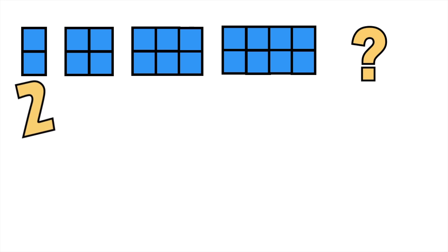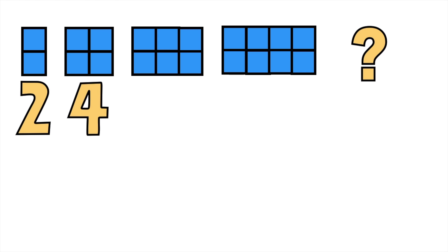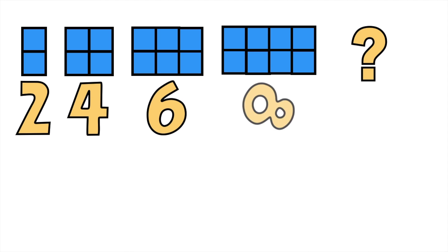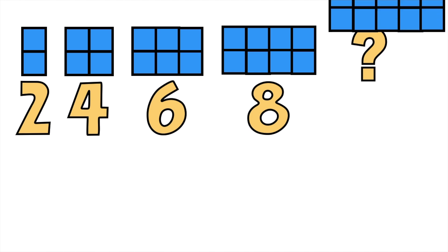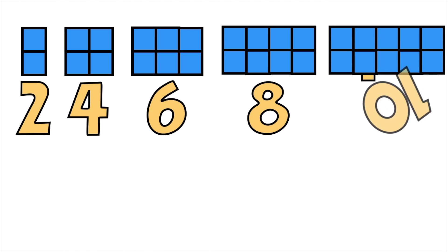How about if we have this? On the first term, we have two boxes. On the second term, we have four boxes. On the third term, we have six boxes. And on the fourth term, we have eight boxes. So children, how many boxes do we have in the fifth term? Very good! We're going to have ten boxes.